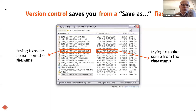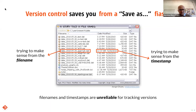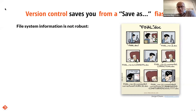Another alternative is to make sense from the timestamp — trying to understand whether a file is in a more advanced stage based on when it was modified. But neither of these two methods is really reliable. These ways are not robust. You might not remember why you gave a name to a file, and if you revisit it next week or in a month, perhaps it doesn't make sense. The name is really arbitrary.